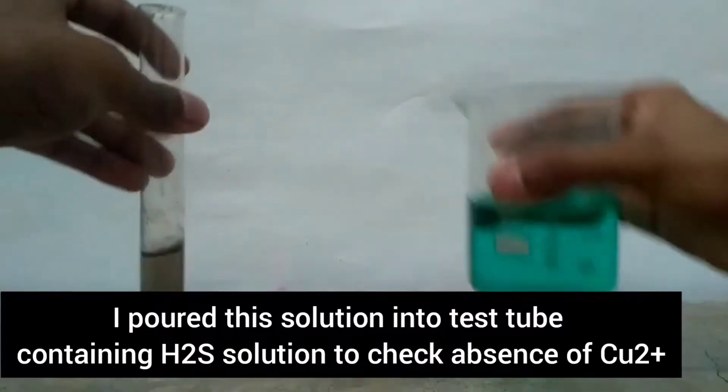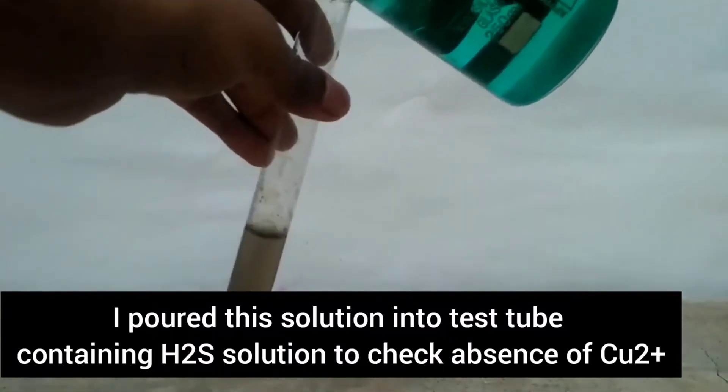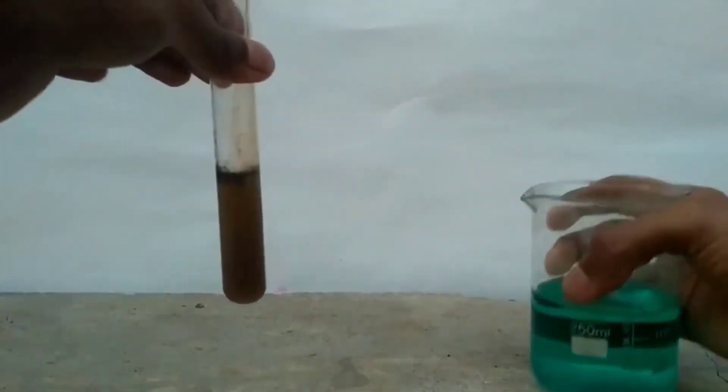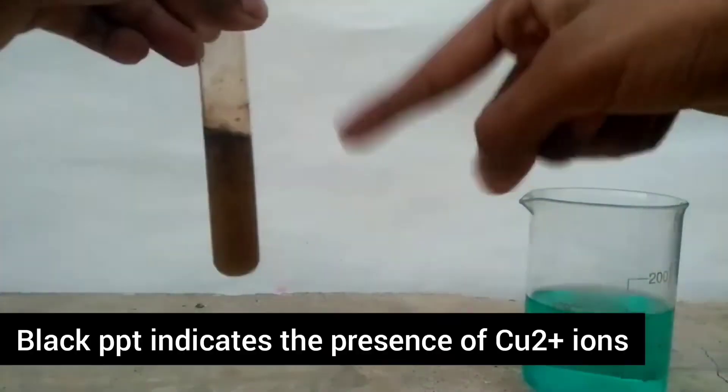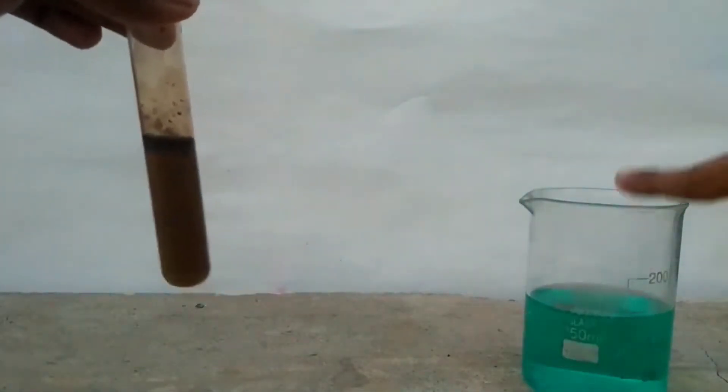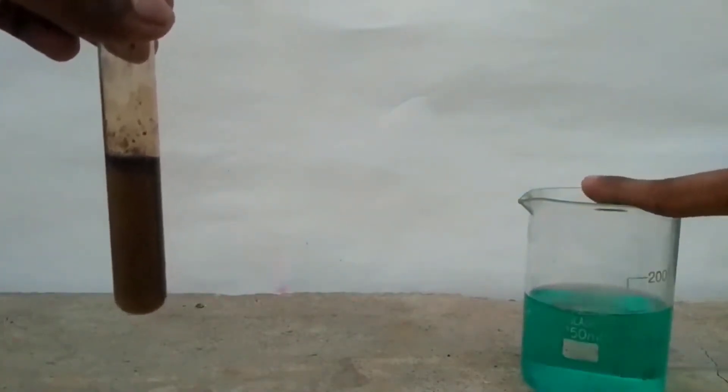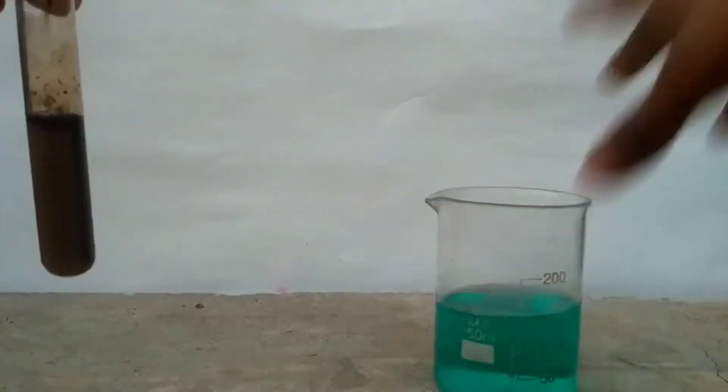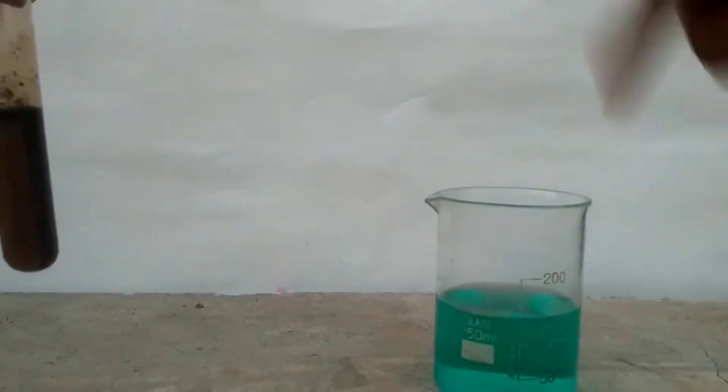Now I will pour this solution into hydrogen sulphide solution to check whether our copper is absent. But no, there is a formation of black precipitate which indicates the presence of copper ions in our solution. So again I have to pass hydrogen sulphide gas into this solution until all of the copper gets removed.